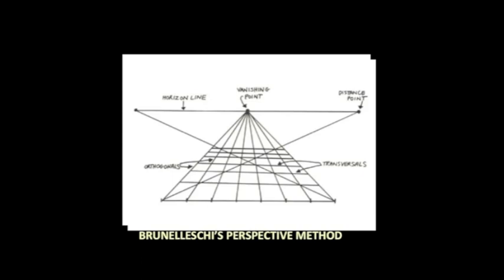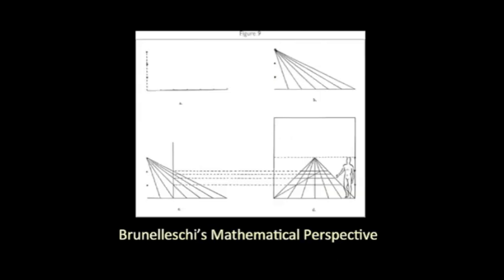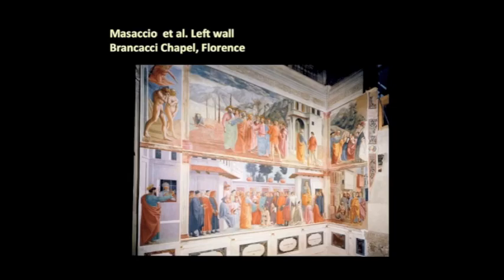Brunelleschi's method for representing perspective — if any of you have ever had to construct a perspective in the old non-computerized fashion, you probably used something very similar. You have a measuring line in the vertical and horizontal, project points upward, and get something that converges. Brunelleschi's method was never written down, but he taught it to many of his friends, including artists such as Masaccio and Donatello. It was not until a bit later that Leon Battista Alberti actually wrote down the technique of perspective in his book De Pictura, on painting.